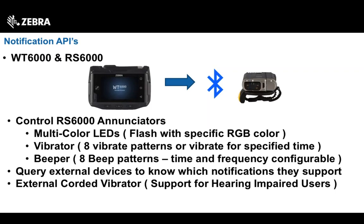Being able to query those devices allows you to find out whether they're capable of doing something before you try to make them do so. You could ask the notification device whether it's capable of flashing LEDs or has a beeper. Of course, if you had just the external corded vibrator attached, it would return that it was only capable of vibrating.